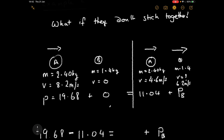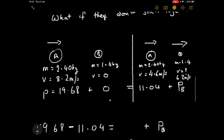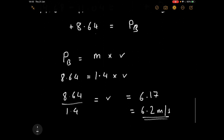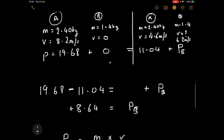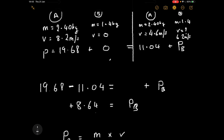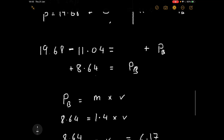Object A comes in and bangs into object B, giving it a big kick, so B travels at quite a high speed. If you kick something light you give it significant momentum, but that also reduces your own momentum. The method is always the same: work out the momentum on one side, equate it to the momentum on the other, and cancel things out by subtraction or addition.